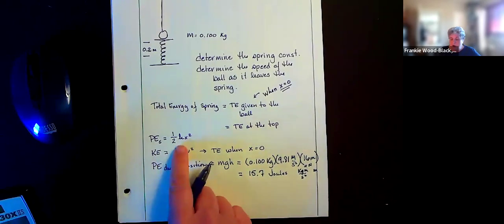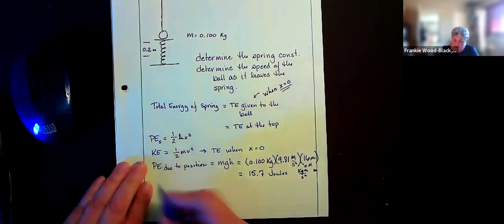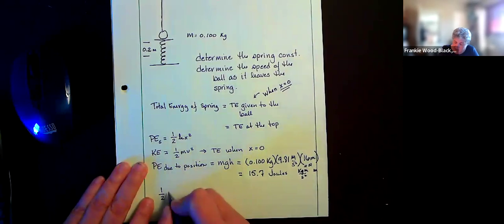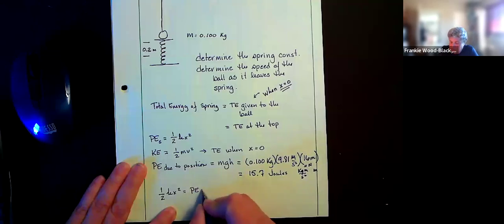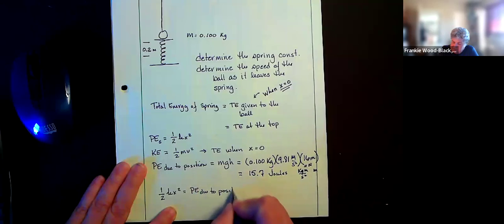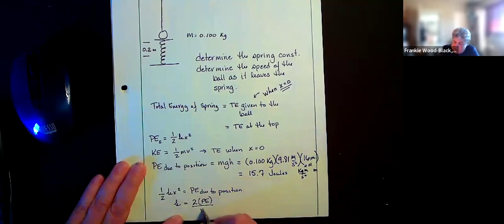So if I want to know the spring constant, I'm going to have that one-half kx squared has got to equal my potential energy due to position. And k is going to equal 2 times that potential energy divided by x squared. And so it's going to be 2 times 15.7.